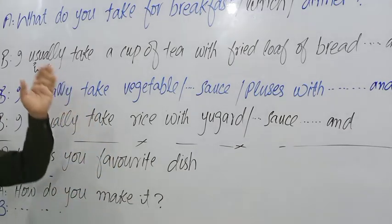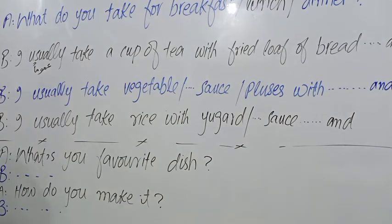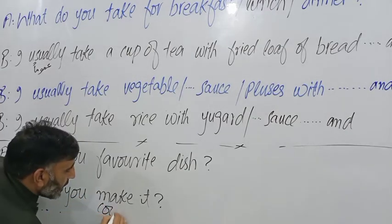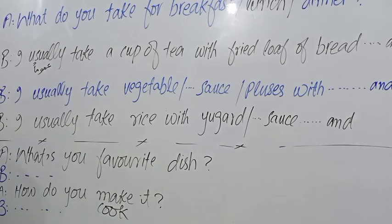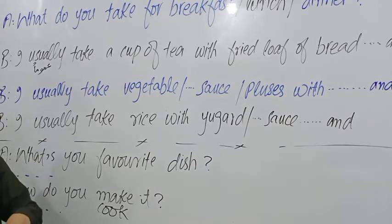Now this covers the activity. The first question in the activity is: what's your favorite dish — 'aapka pasandida khana konsa hai?' What's your favorite dish? Fish is my favorite dish. The second question is: how do you make it, or how do you cook it? Then you will tell the method — first of all clean the fish, make it clear, cut the fish into different parts.